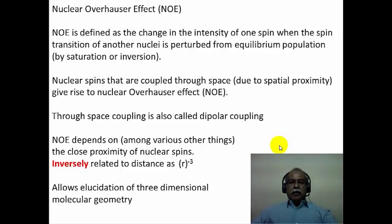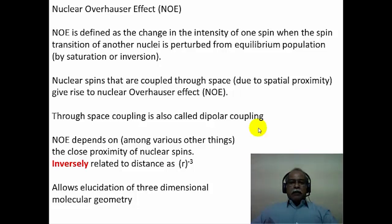At room temperature, you normally have the equilibrium population when two spins are present. This equilibrium population of one spin can be disturbed if the other nucleus is simultaneously irradiated with a second radio frequency. Nuclear spins that are coupled through space—due to spatial proximity—give rise to the nuclear Overhauser effect. They need not be bonded directly; there can be a through-space interaction known as the dipole-dipole interaction, also called dipolar coupling.